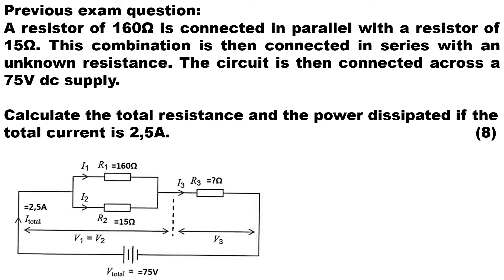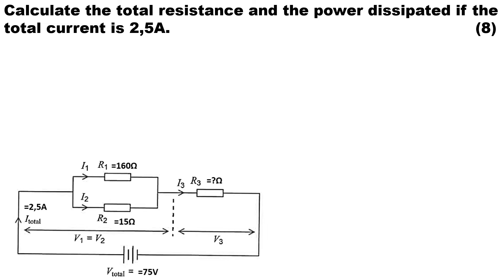They've given us that R1 is 160 ohms, R2 is 15 ohms, and R3 is an unknown resistor. Now I'm not going to show you the long drawn out method to do this. I'm going to show you the shortcut to calculate the total resistance and the power dissipated if the total current is 2.5 amps.